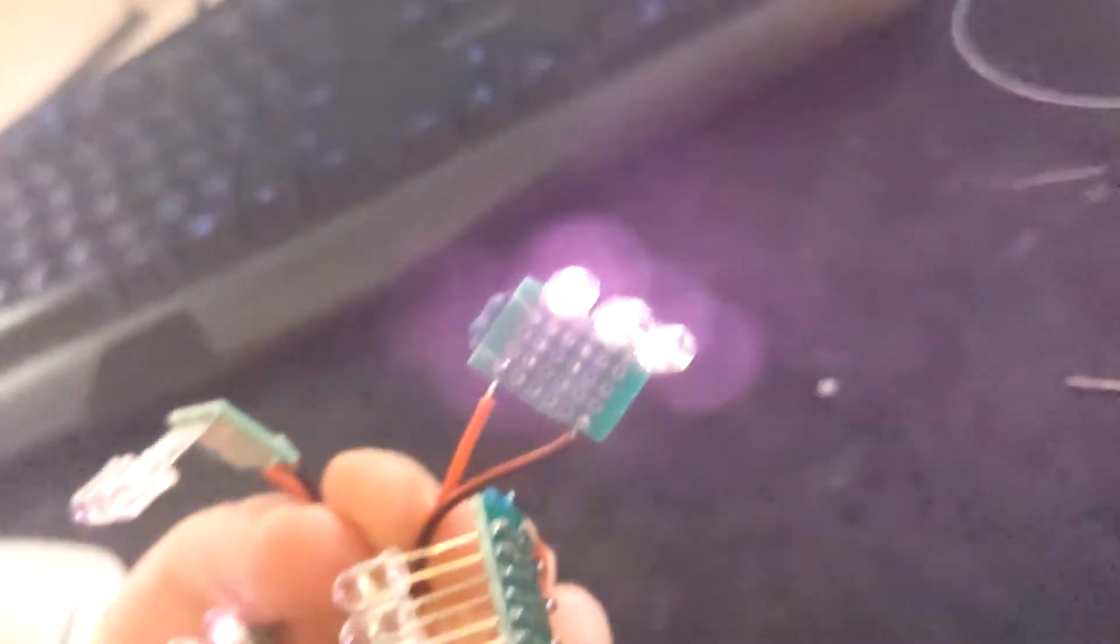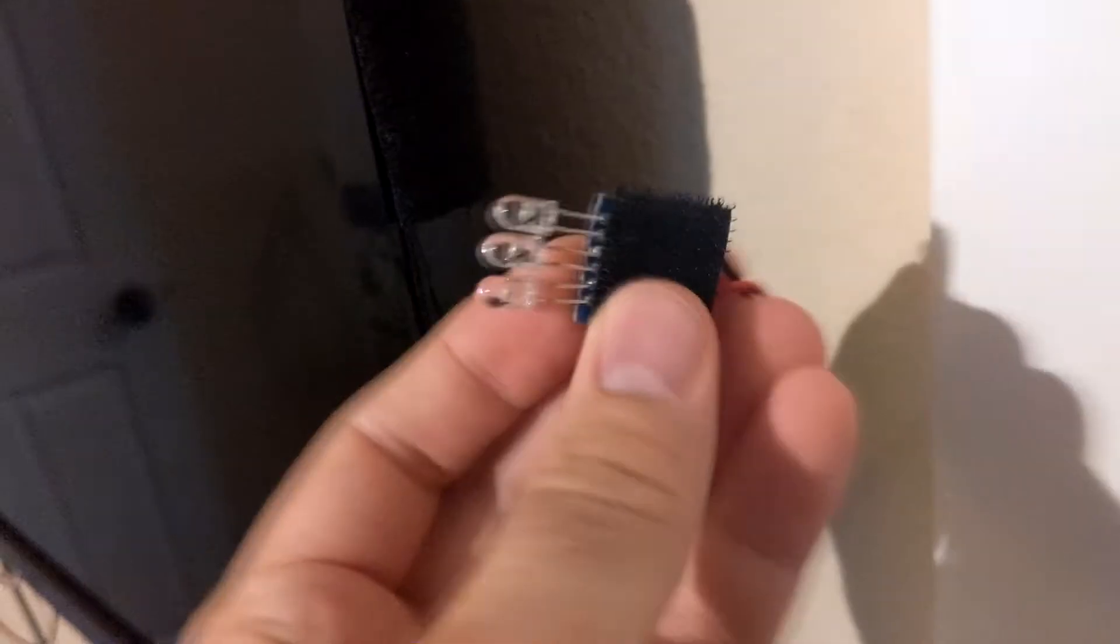I guess some Apple phone cameras cannot see infrared so use an Android phone. When you confirm that all the IR LED lights are working you can place velcro onto each board and place them onto your TV.